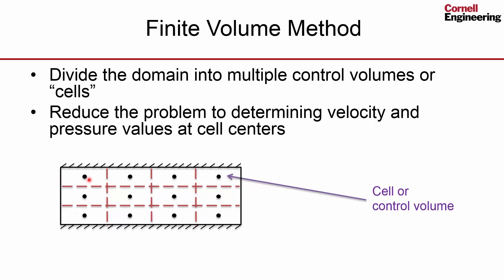And I have 12 cells, so I have a total of 36 unknowns. So I've reduced the problem from determining three unknown functions to 36 values. And that's a big reduction.